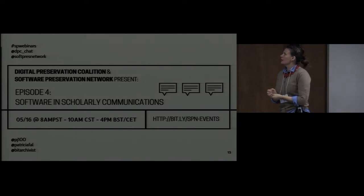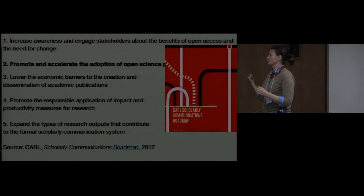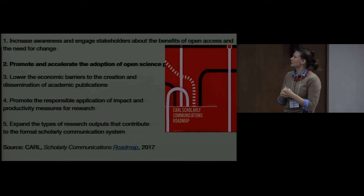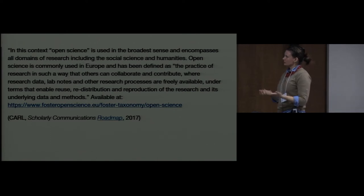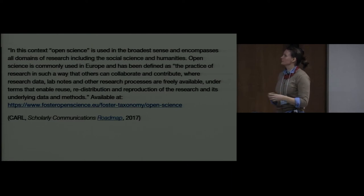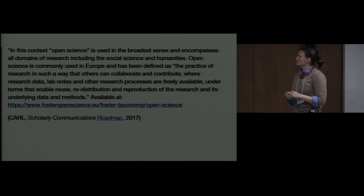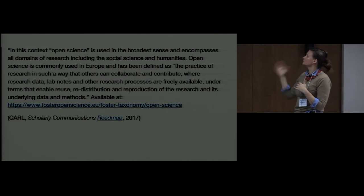In episode four, which I hosted, I was looking at software and scholarly communications. Because I work in the Canadian context, I was particularly interested in the scholarly communications roadmap of 2017 put out by CARL. Of their five key findings, I focused on the second: to promote and accelerate the adoption of open science platforms. Open science is used in the broadest sense encompassing all domains of research including the social sciences and humanities, defined as practice enabling others to collaborate and contribute, where research data, lab notes, and other research processes are freely available under terms enabling reuse, redistribution, and reproduction.